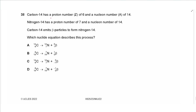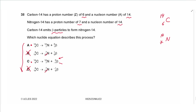Question 38: Carbon-14 has proton number 6 and nucleon number 14. Nitrogen-14 has proton number 7 and nucleon number 14. Carbon-14 emits a beta particle to form nitrogen-14. The nuclear equation has ¹⁴₆C → ¹⁴₇N + ⁰₋₁e. The nucleon number 14 is at the top and proton number at the bottom. The answer is C.